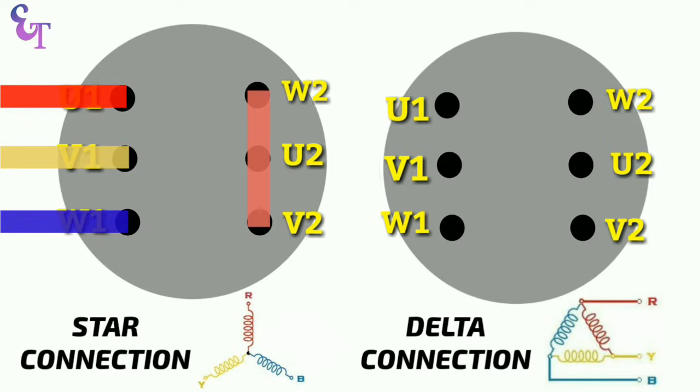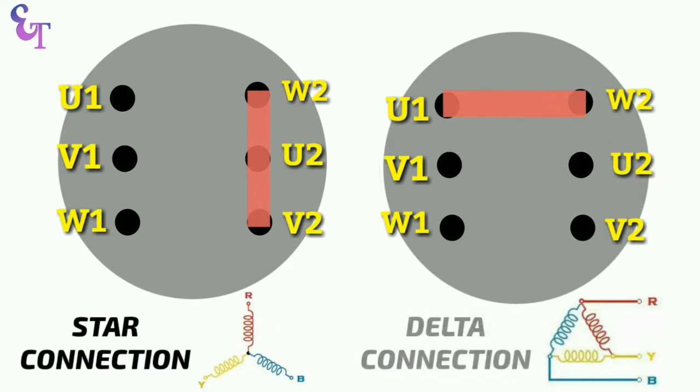If we want to connect motor in delta then we connect U1 terminal with W2, V1 with U2 and W1 with V2 terminal. In this way we short motor terminals and connect motor winding in star or delta.